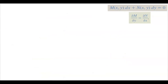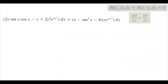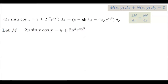Now let's look at an example of an exact differential equation: (2y·sin(x)cos(x) − y + 2y²·e^(xy²))dx + (x − sin²(x) − 4xy·e^(xy²))dy = 0. M is the quantity multiplied by dx: 2y·sin(x)cos(x) − y + 2y²·e^(xy²). Bringing terms to the other side, N becomes −x + sin²(x) + 4xy·e^(xy²).